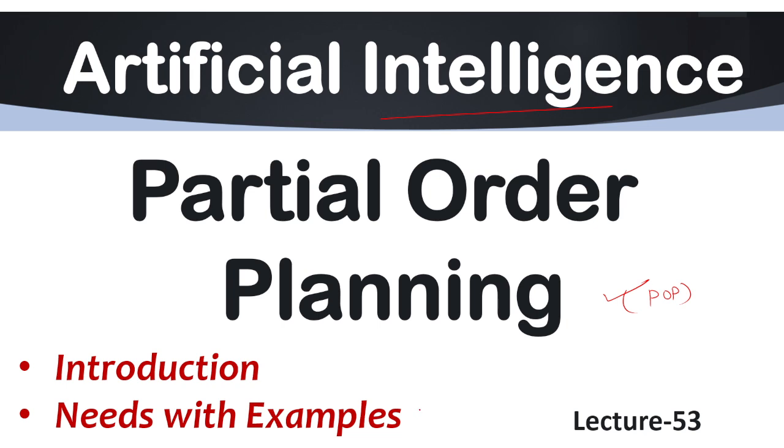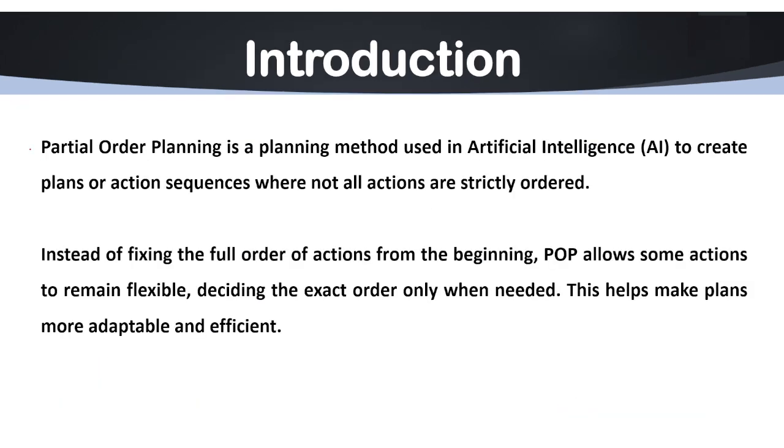Partial order planning is a planning method used in AI to create plans or action sequences where not all the actions are strictly ordered. This is the basic introduction of partial order planning.